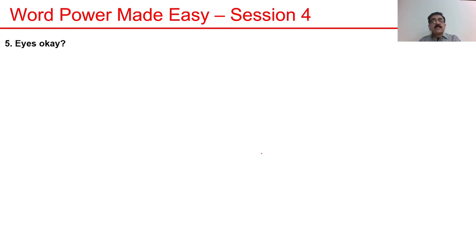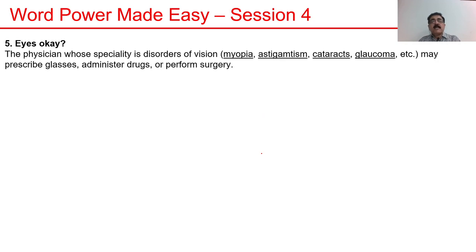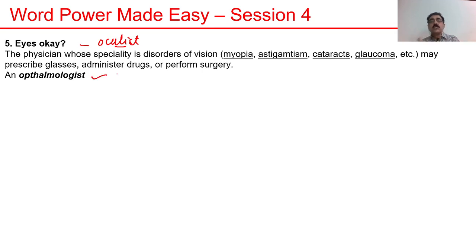Now, eyes. What do we call the doctor who deals with eyes? A well-read person will call this specialist an ophthalmologist. This specialist deals with conditions such as myopia, astigmatism, cataracts, and glaucoma. They can prescribe glasses, administer drugs, and perform surgery. This type of doctor is the ophthalmologist — they check your eye, identify errors, and perform surgery if needed.